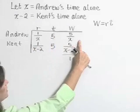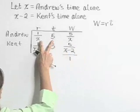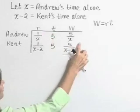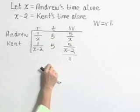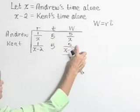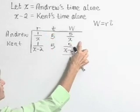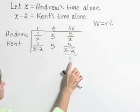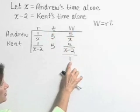So their time value is 5 each. And the amount of work done by each, we get by the product of r times t. 1 over x times 5 is 5 over x. Product here, 5 over x minus 2, and together they're going to complete one entire job.